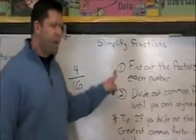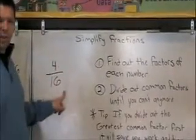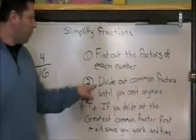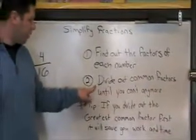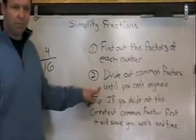We want to find out the factors of each number, the factors of 4 and the factors of 16. Then we want to divide out the common factors until you can't divide out any more factors.